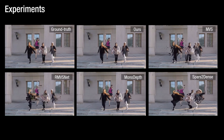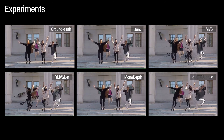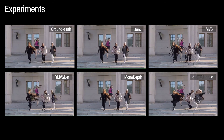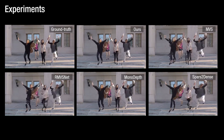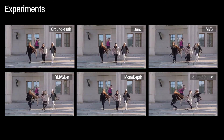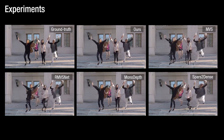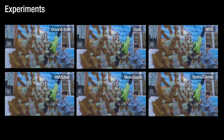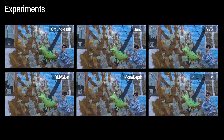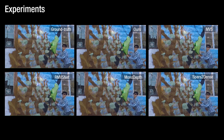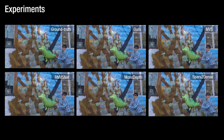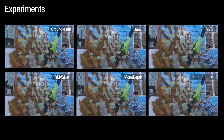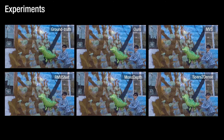This slide shows the comparison on novel view synthesis in time-varying scenarios. We can observe significant artifacts in baseline methods, such as wobbling effects, pixel floating, and jitters of dynamic content.